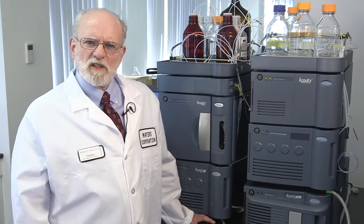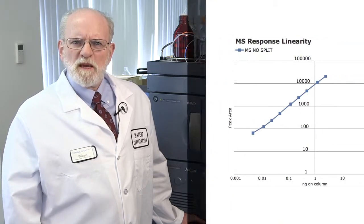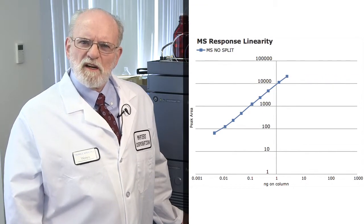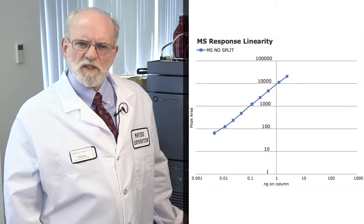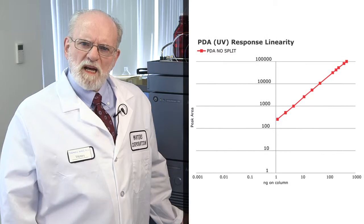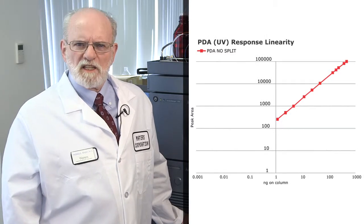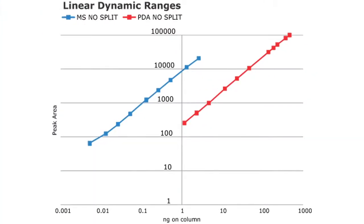When testing the dynamic range of the detectors, the Acuity QDA mass detector is linear with concentration and extends about four orders of magnitude. The UV response has a similar linearity in total range, but the linear response occurs at about 100 times higher concentration.